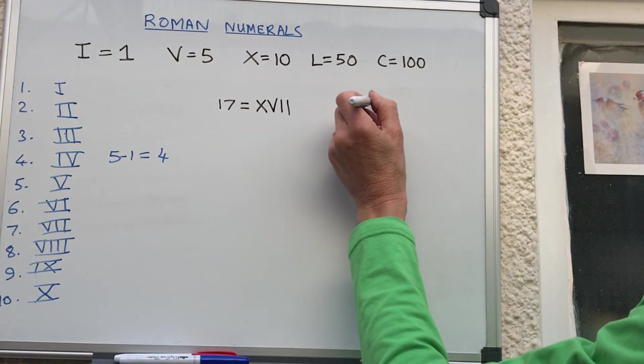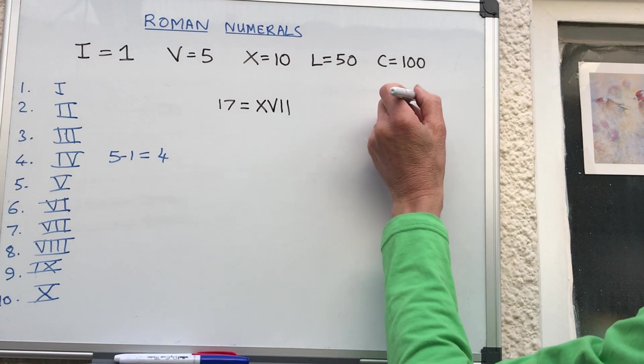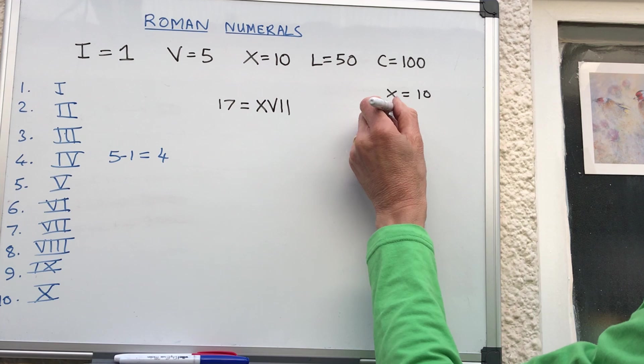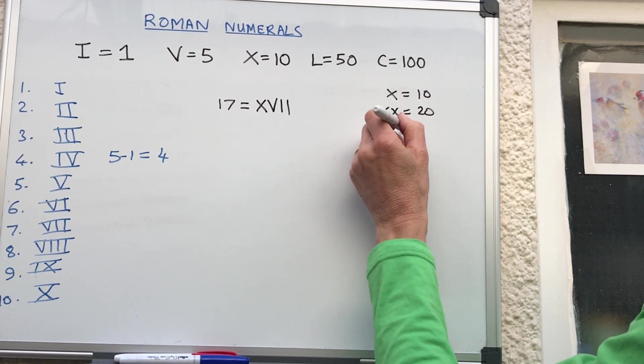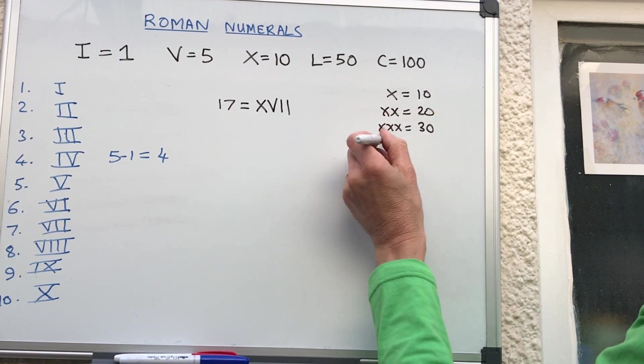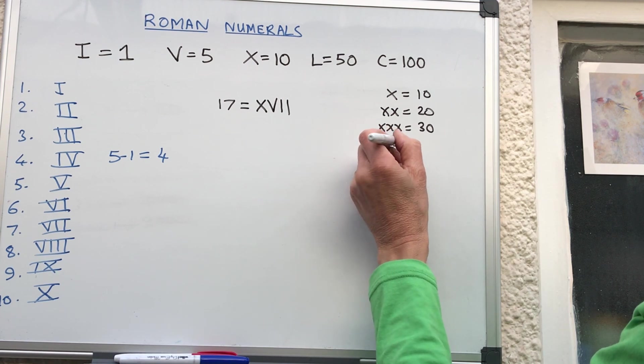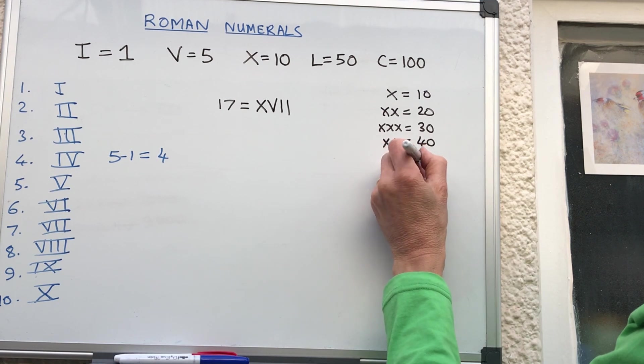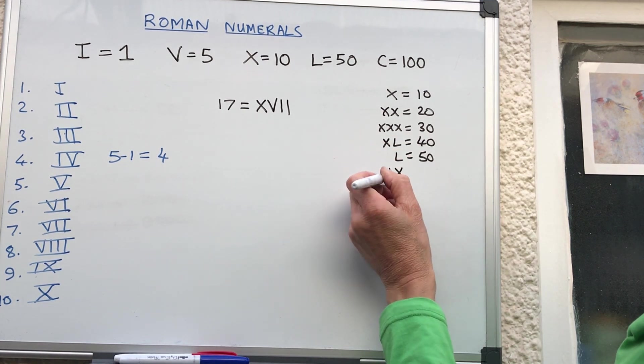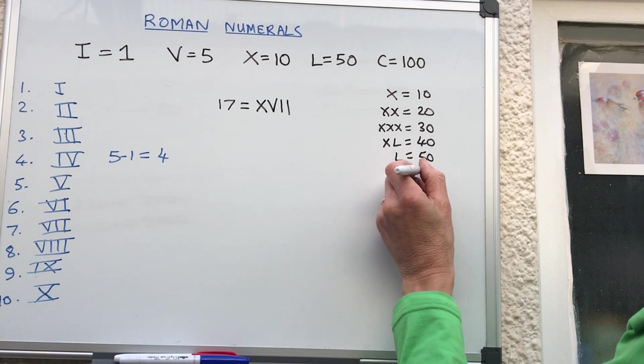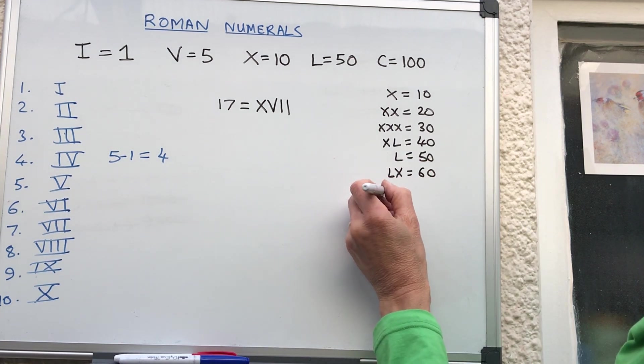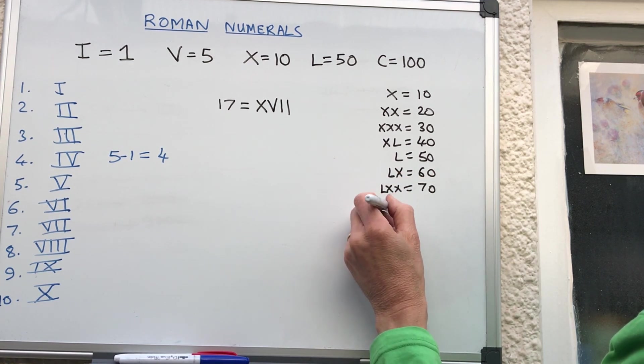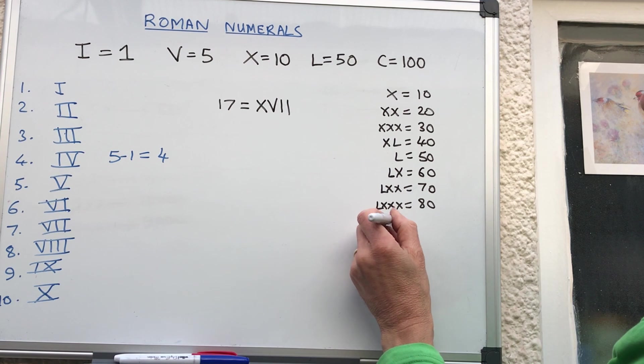Let's write all the tens. X is ten, then we have XX which is 20, XXX is 30, XL is 40 - you've got to do 50 minus 10. 50 is L, 60 is 50 plus 10, 70 would be LXX, then 80 we have three X's, 90 is XC.